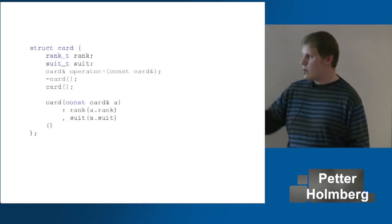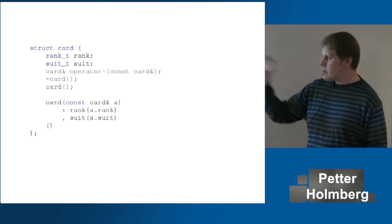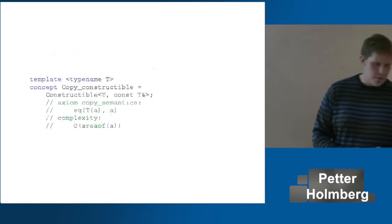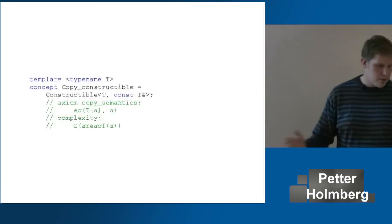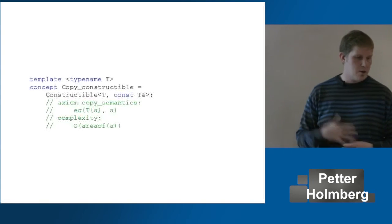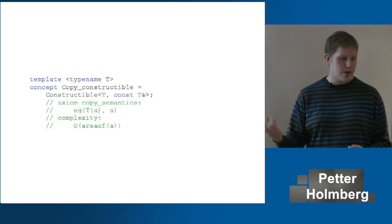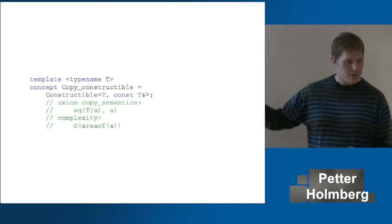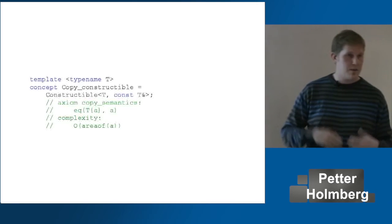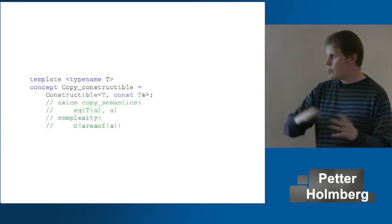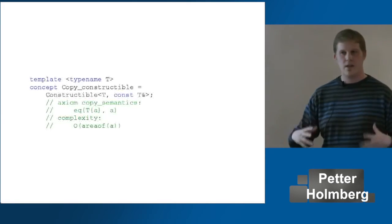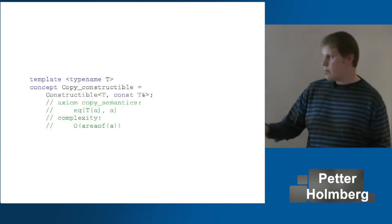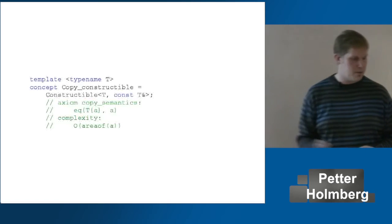So we should have a copy constructor as well. Very simple here — we just copy construct the members in declaration order. The concept is quite straightforward: 'copy constructor' means we're constructible with one argument of type `const T&`. It gives us copy semantics — an object copy constructed out of A would be equal to A. And again, complexity linear in the area of the object.